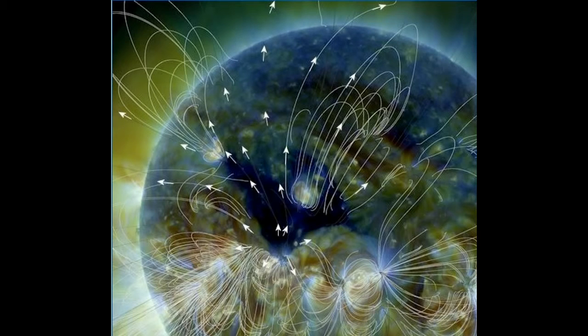At its peak, the radiation storm registered S-1 on NOAA storm scales, which is to say it was a minor event with minimal effects on Earth orbiting satellites and aviation. The storm is subsiding now.